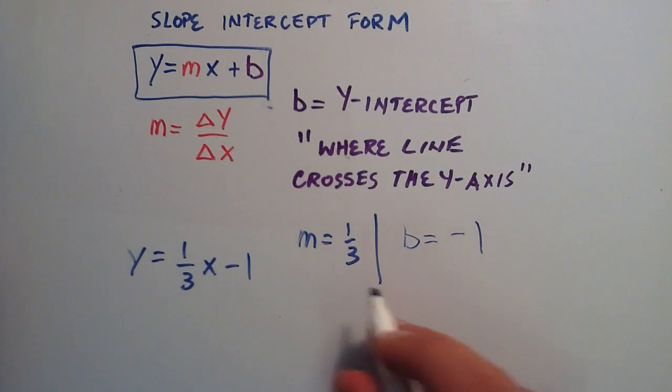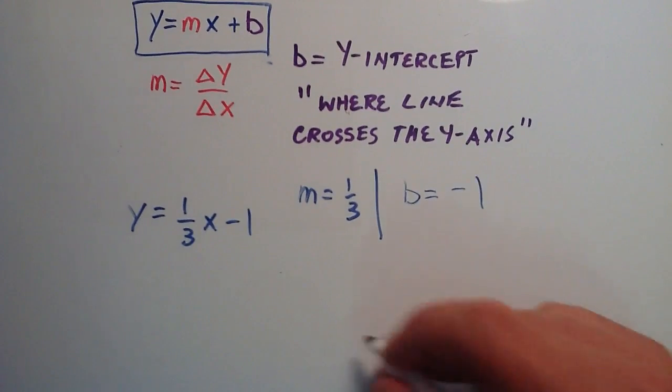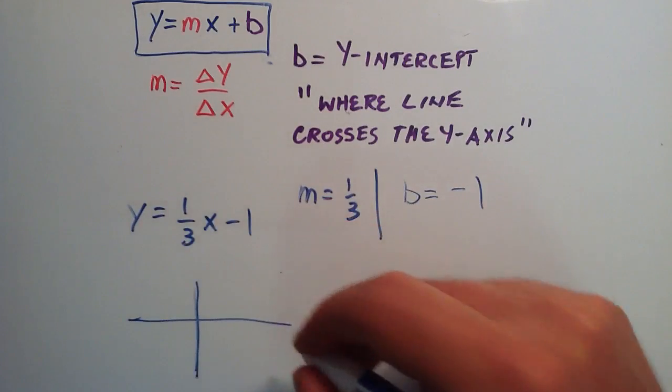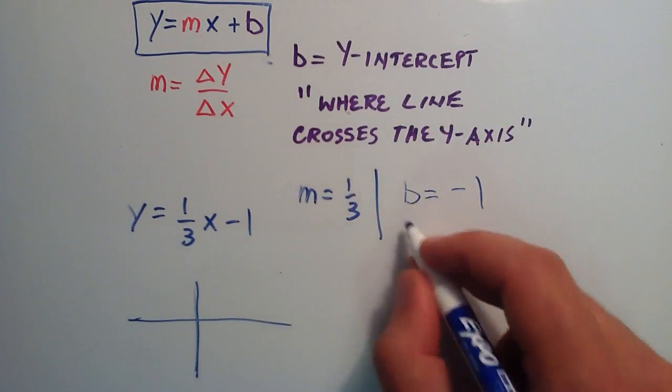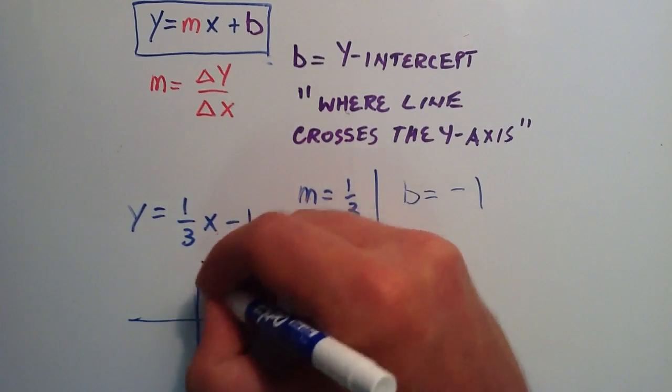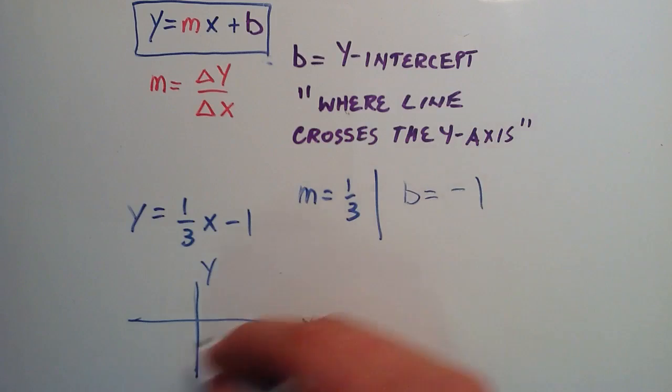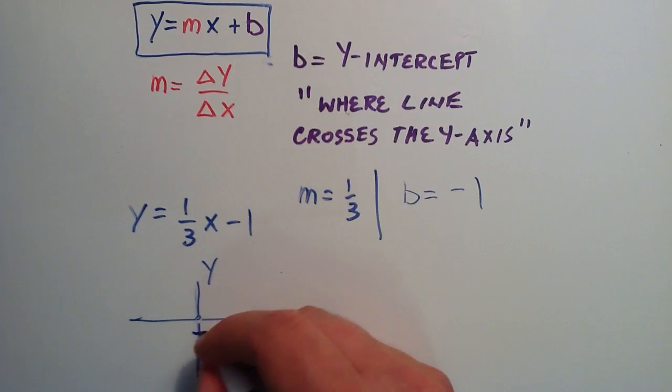So that was simple enough to extract the m and b out of this equation. And we're going to use this information to just quickly graph the line y equals one-third x minus one. So, the intercept, negative one, we start at the origin, and we just go down one unit in the y-direction. That puts us here.